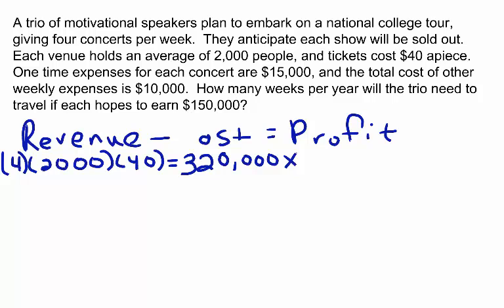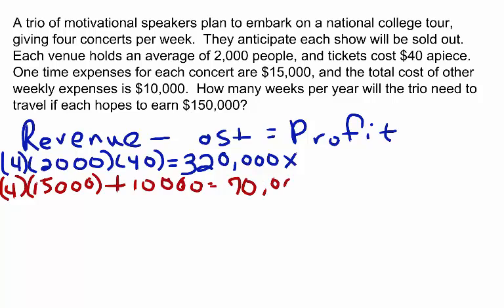Now let's take a look at costs. We know that there's a one-time expense for each concert, and we know that there are four concerts per week. The one-time expense for each concert is $15,000, so I multiply that by the number of weekly concerts. We also know that there are other expenses each week of $10,000, so we add $10,000. That gives us $70,000 in expenses each week. How many weeks? We don't know yet, so we call that X.